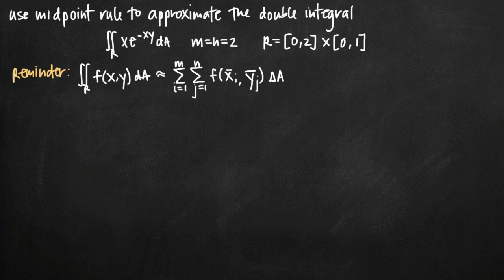Today we're going to be talking about how to use the midpoint rule to approximate a double integral. In this particular problem, we've been given the double integral over the region that lies above the rectangle defined by the x interval from 0 to 2 and the y interval from 0 to 1, and lies under the function xe to the negative xy.